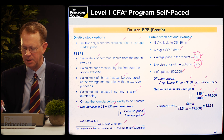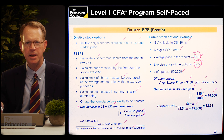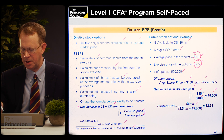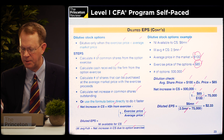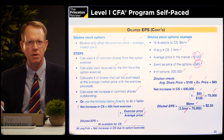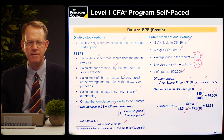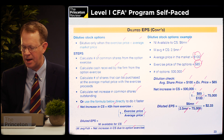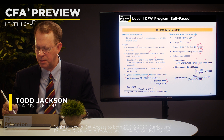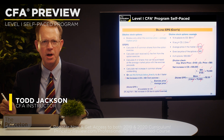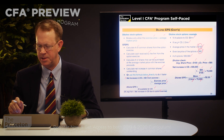Diluted earnings per share is calculated by taking our $6 million numerator from the basic EPS computation, divided by the 2.5 million shares outstanding used in basic EPS, increased by the additional 75,000 shares under the hypothetical exercise of the stock options. This gives us a diluted earnings per share of $2.33.